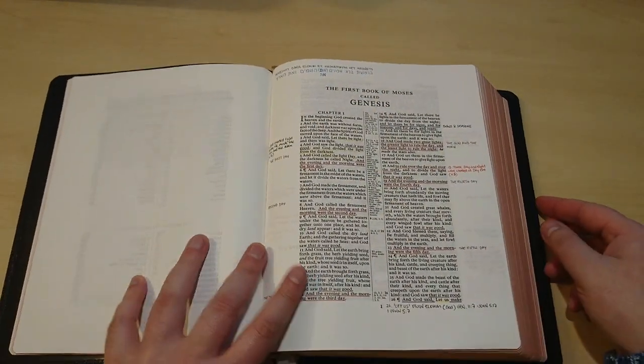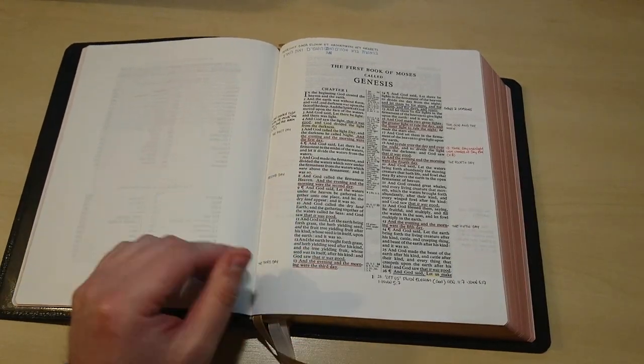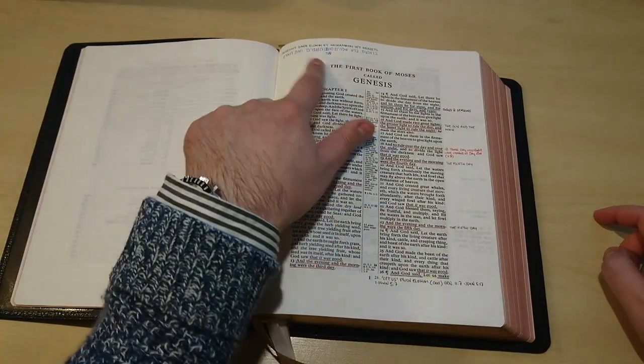And here we have Genesis. Now in Genesis, as you can see, I have some notes and plenty of space to go around the perimeter, even on top.